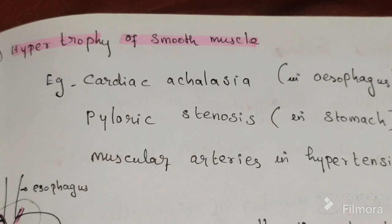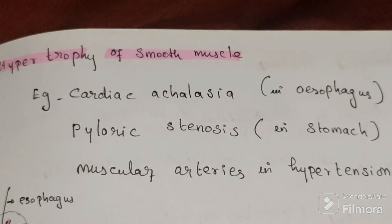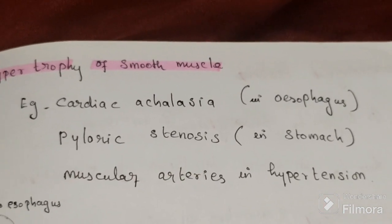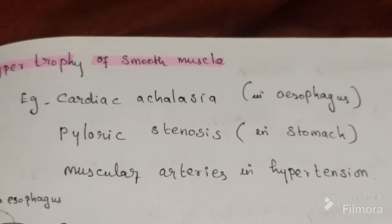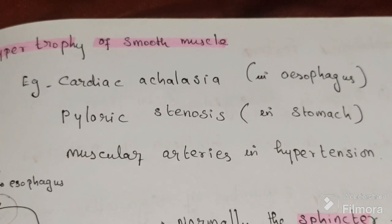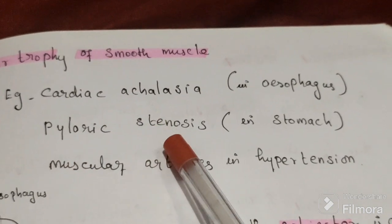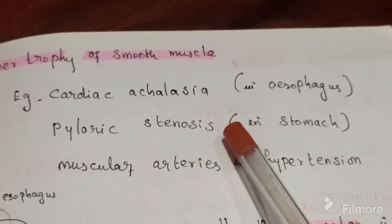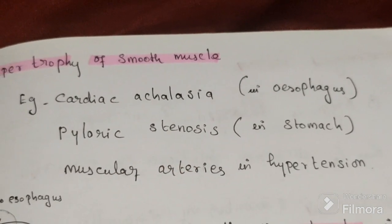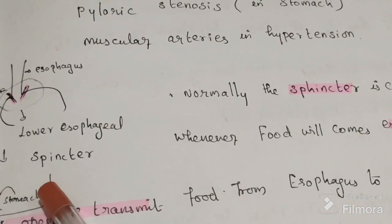Next is hypertrophy of smooth muscles. The condition is called achalasia. Examples include cardiac achalasia in the esophagus, pyloric stenosis in the stomach, and muscular arteries in hypertension.